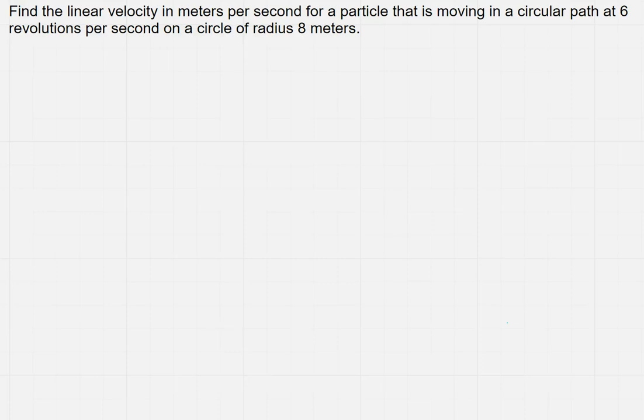We want to find the linear velocity in meters per second for a particle that is moving in a circular path at 6 revolutions per second on a circle of radius 8 meters.